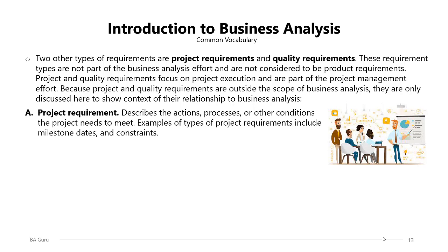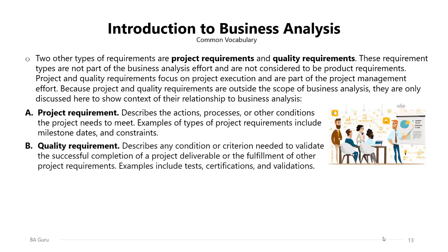A project requirement describes the actions, processes, or other conditions the project needs to meet. Examples include milestone dates and constraints of the project. A quality requirement describes any condition or criteria needed to validate the successful completion of a project deliverable or the fulfillment of other project requirements. Examples of quality requirements include tests, certifications, and validations of the product.